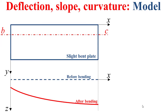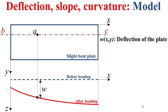As you can see, the deflection of the plate is depicted here in red. If we consider a point A in the line BC, the deflection at this point A will be denoted by W, as the distance between the plane of the plate before bending and the real position of the point A after bending.